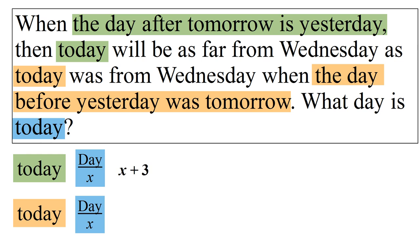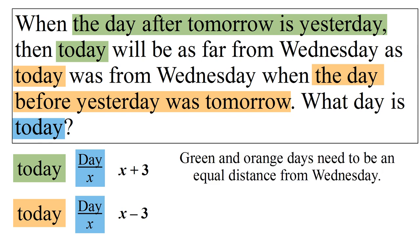So the green day is three days ahead of today and the orange day is three days before today. We need the green and orange days to be an equal distance from Wednesday.